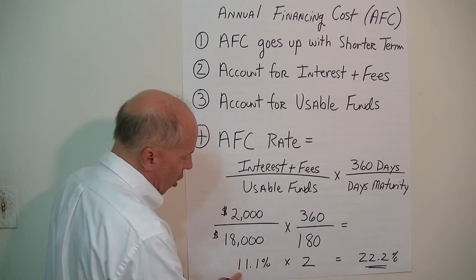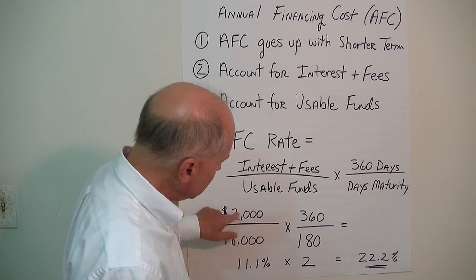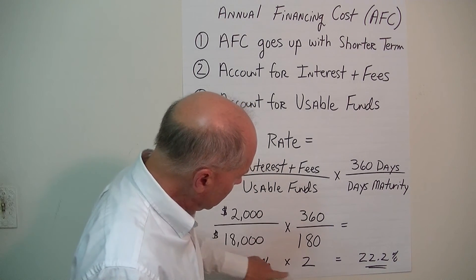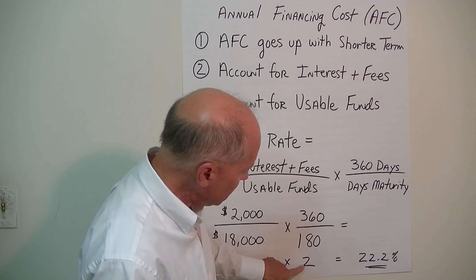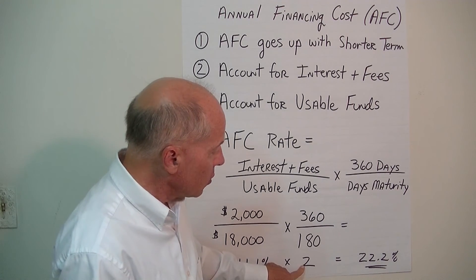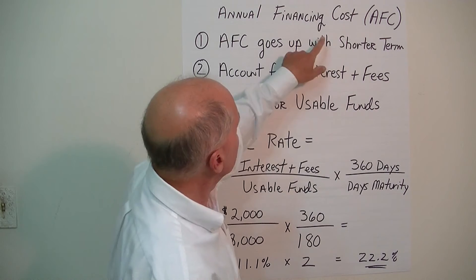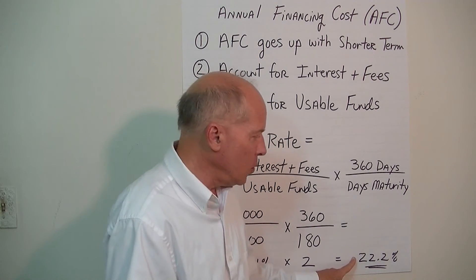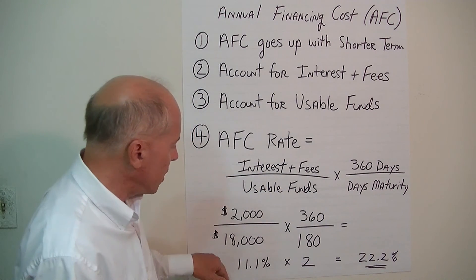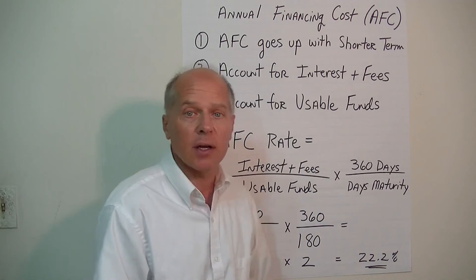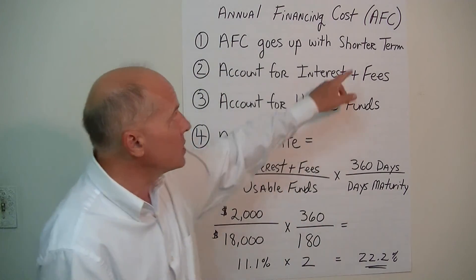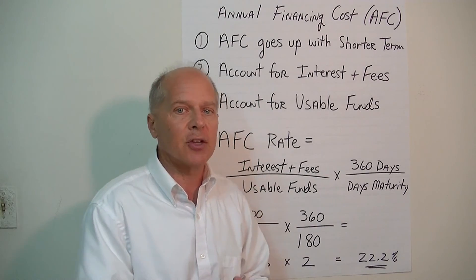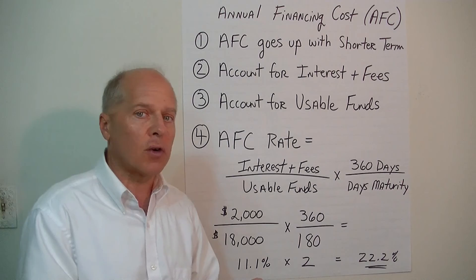That 11.1% is the annual rate, but we're not borrowing this money for 12 months — we're borrowing it for only 6 months. So you take 11.1% times 2, because this is a 6-month loan, not a 1-year loan. The annualized financing cost — the AFC — for this $20,000, 6-month loan is 22.2%, versus 11.1% for a 1-year loan. This shows how the term of the loan dramatically increases the annualized financing cost. As you borrow money on a shorter-term basis, your costs go up dramatically, and you need to take that into account as you run your business and finance current operations with the bank.